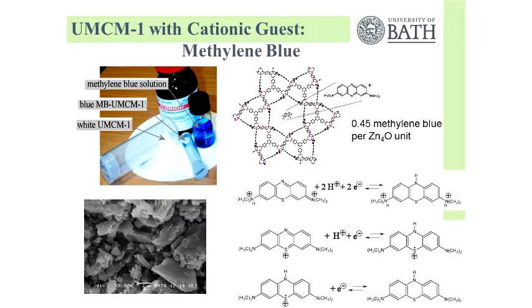The idea was to absorb this. This is the starting material, it's a white powder. When it's absorbed, it's blue. It's a nice blue color from the dye inside of the pores. The solid looks like this. There are some chunks of material. We have in this case about half a methylene blue molecule per Zn-4 node site.